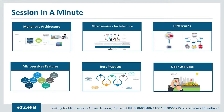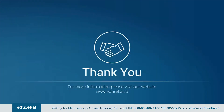Let me give a quick summary of what we discussed. We started with understanding monolithic architecture and its challenges. Then we went through microservice architecture and understood the differences between both. After that, we focused on the features of microservices and discussed best practices to design them. Finally, we compared Uber's previous framework to the present one and understood what made them change their architecture. Thank you for watching this video and have a great day!